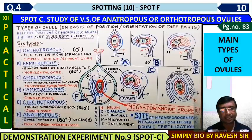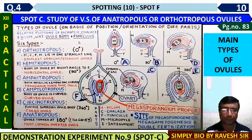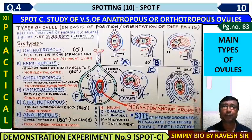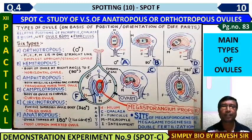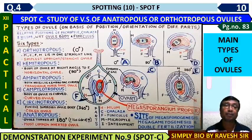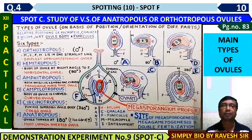For orthotropos ovule, the micropyle, chalaza, and funicle are all in one straight line, and the funicle is shortest. For the anatropos ovule — the most common type found inside the ovary — the ovule is turned 180 degrees. Micropyle and chalaza are in a straight line, but the funicle and micropyle come side by side. This is the most important feature of the inverted ovule.